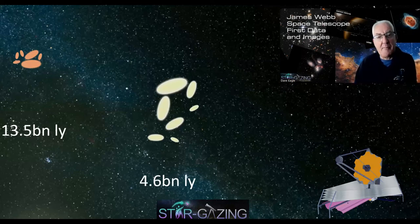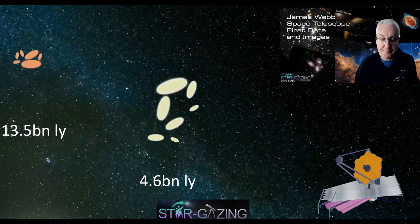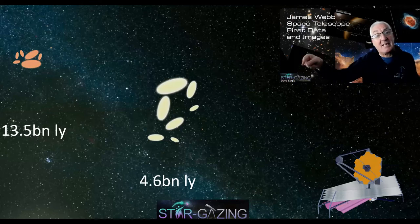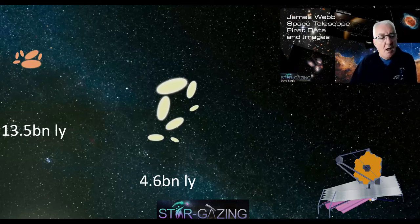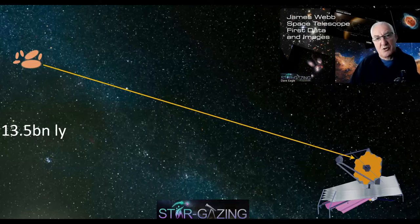We're seeing that cluster as it was 4.6 billion years ago - the time our solar system was formed. The sun, the planets, and everything else formed 4.6 billion years ago, and because light has taken that long to reach us, we are seeing them as they were then. So here we have two galaxy clusters: one really close and one way off in the distance. The light from the distant cluster normally travels in a straight line.